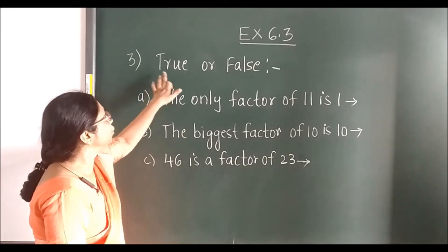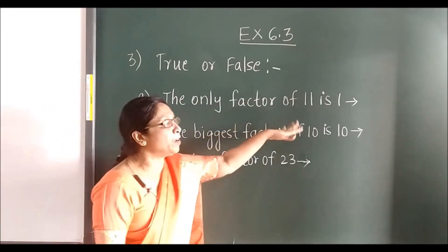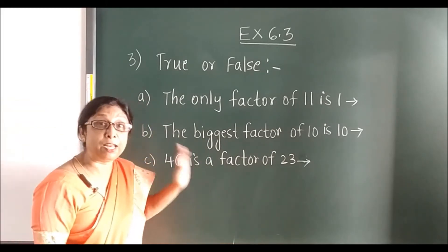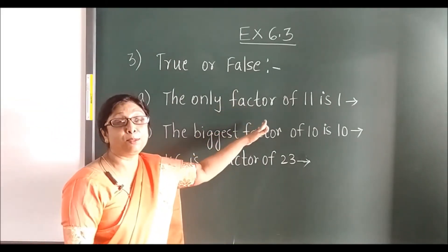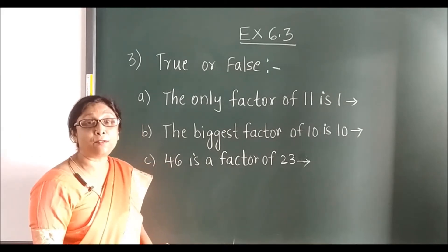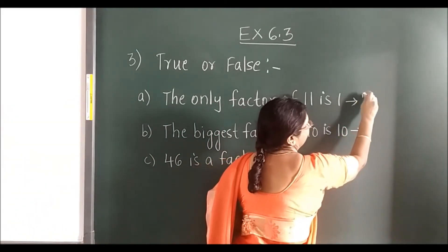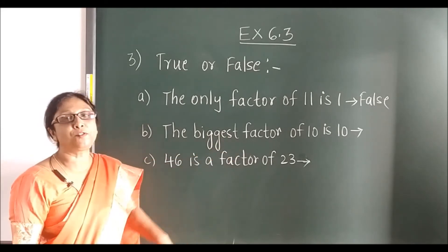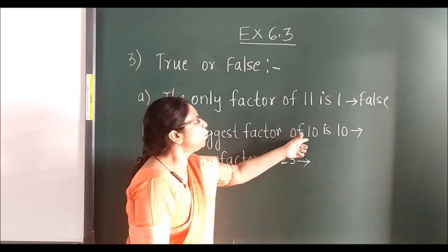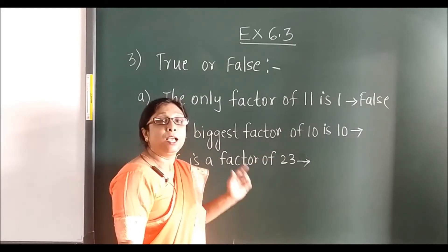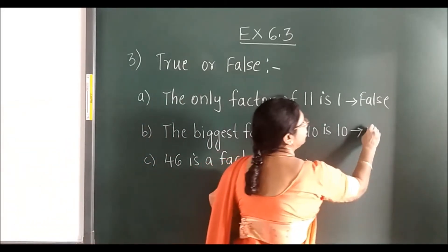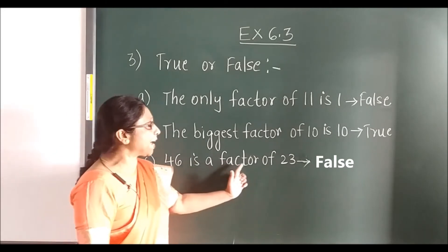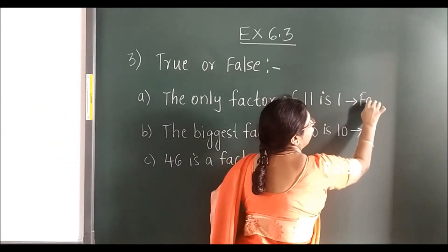Now third — true or false. 'The only factor of 11 is 1.' Is it true? No, because along with 1, the number 11 is also a factor — it comes in the 11 times table. So this is false. 'The biggest factor of 10 is 10.' Yes, that is true, because in the table of 10 the last number will be 10. 'Is 46 a factor of 23?' That is false.